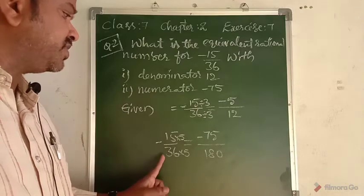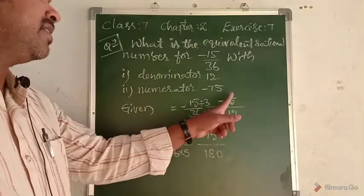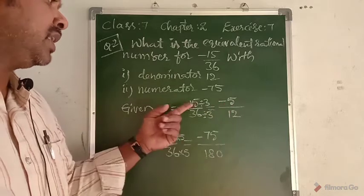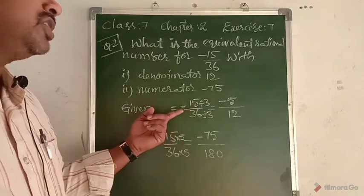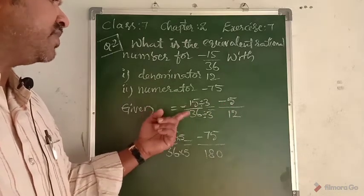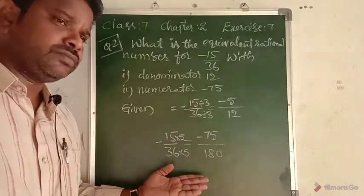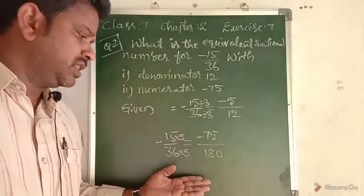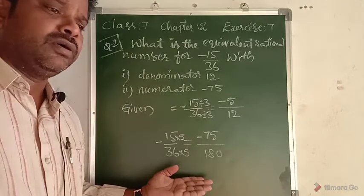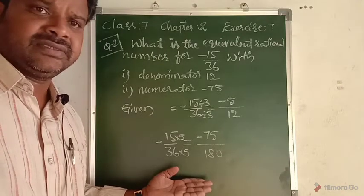So the required equivalent rational number is minus 75 by 180, and the equivalent with denominator 12 is minus 5 by 12. Both are equivalent rational numbers for minus 15 by 36. You can write equivalent fractions in this way, whatever the numerators and denominators asked.